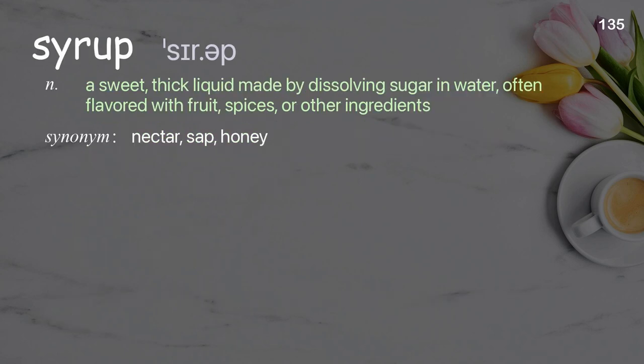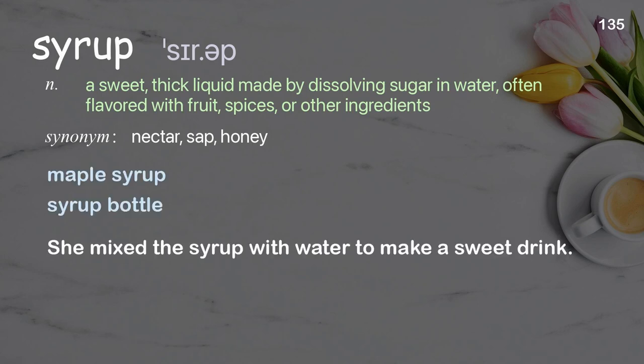Syrup: a sweet, thick liquid made by dissolving sugar in water, often flavored with fruit, spices, or other ingredients. Examples: maple syrup, cough syrup.